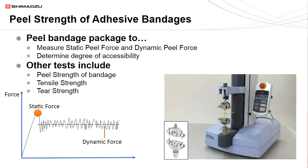This final example shows a peel test for an adhesive bandage. The tabs of the bandage packaging are secured in grips and pulled apart. This test is useful for determining if the bandage is accessible to a majority of the population with varying degrees of strength and dexterity. The static force shows the force required to initiate the package separation, and the dynamic force is associated with the average force to continue peeling the package apart. Other physical properties such as the bandage's adhesiveness, tensile strength, and tear strength can be determined with a similar configuration.